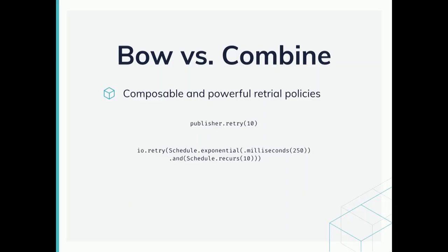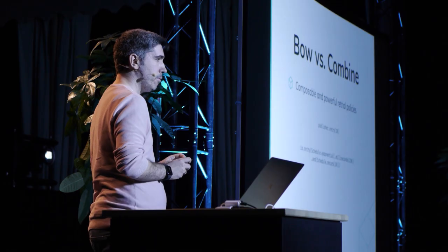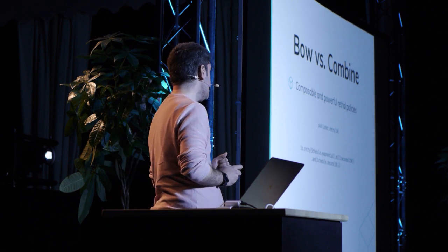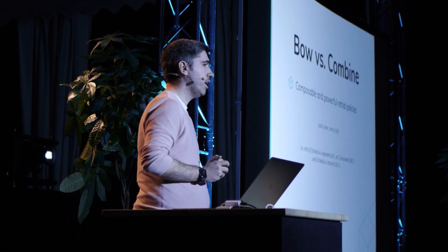If we want to retry a request, all we can do with Combine is retry based on a number of times. Bow provides a composable and powerful way of creating retry policies based on already provided building blocks. For instance, we can retry a request following an exponential backoff algorithm to a maximum of 10 retrials.